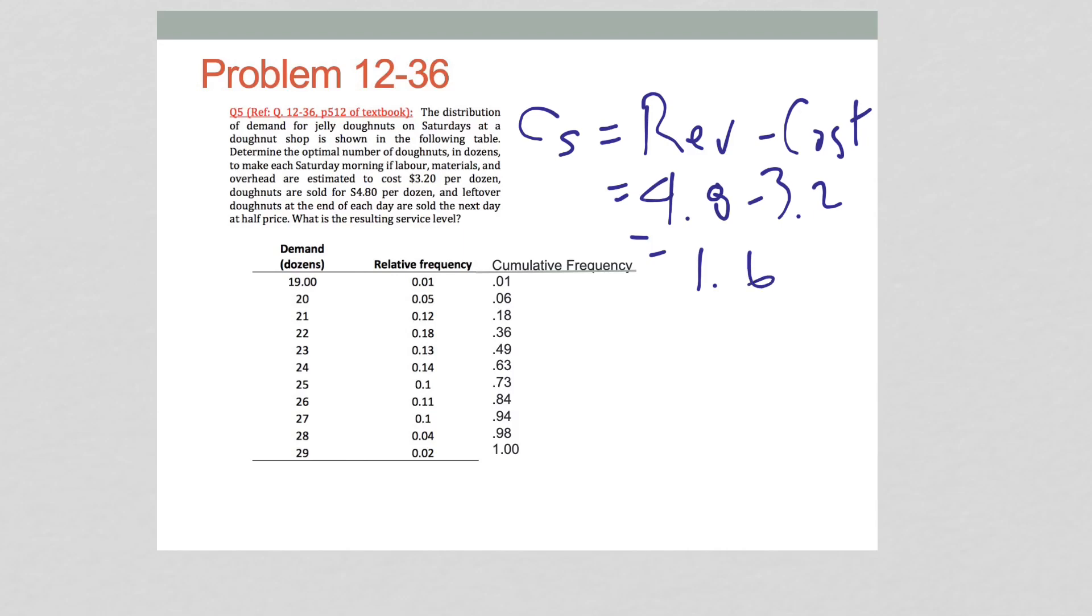Similarly, the cost of excess is equal to cost per unit, same cost, minus the salvage value. The cost is 3.2 minus, what's the salvage value? Look what it says. Leftover donuts are sold at half price. What's the price? The price is 4.8. Therefore, half of that is 2.4, which equals 0.8. We've got everything now. We've got our CE. We have our CS. We have everything we need to calculate.